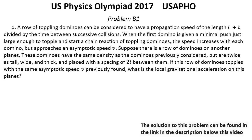Question D. A row of toppling dominoes can be considered to have a propagation speed of the length L plus t divided by the time between successive collisions. When the first domino is given a minimal push, just large enough to topple and start a chain reaction of toppling dominoes, the speed increases with each domino but approaches an asymptotic speed V.